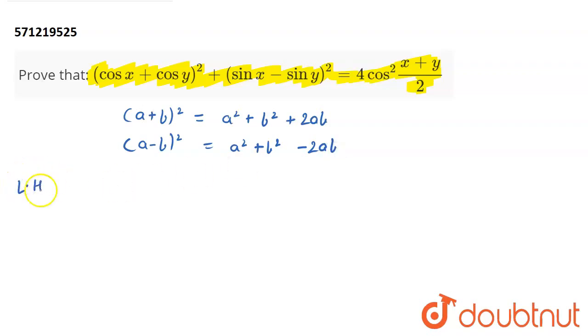Okay, so now let us begin with the left hand side. My left hand side is (cos x + cos y)² + (sin x - sin y)².